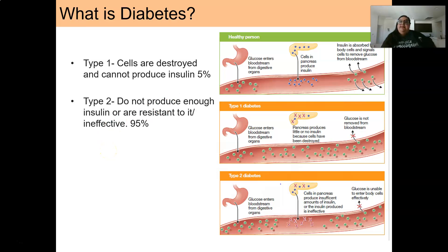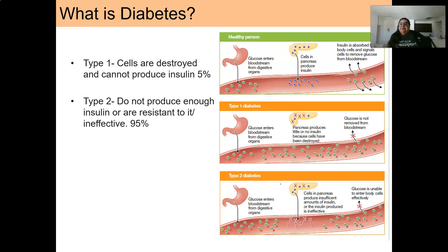There are two different types of diabetes: type one and type two. These are the two main types. Type one is sometimes called juvenile diabetes and is typically genetic. It is caused by the immune system attacking one's own cells — specifically the cells in the pancreas that produce insulin — attacking these cells so that insulin can no longer be produced. This happens in about 5% of all diabetes cases.